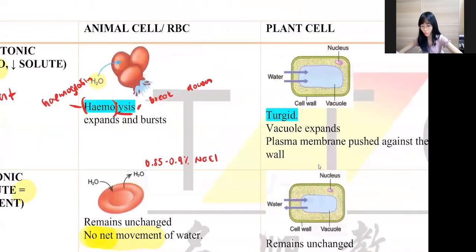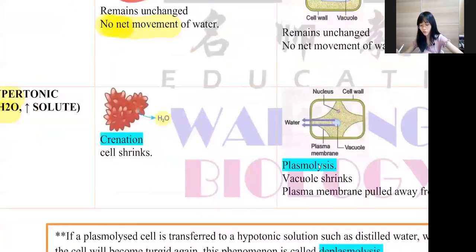So we've done with red blood cell. We have hemolysis — it means bursting — and we have crenation — it means shrinking.